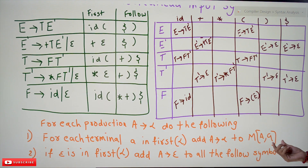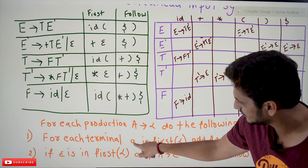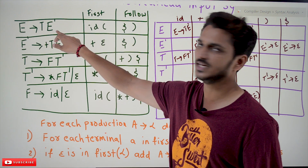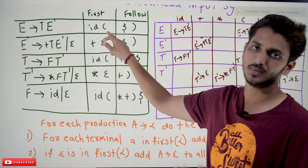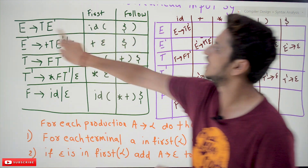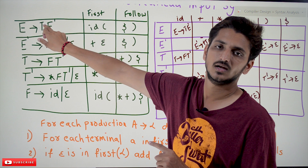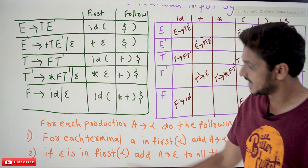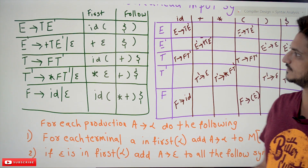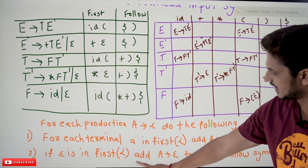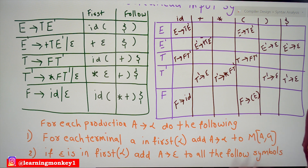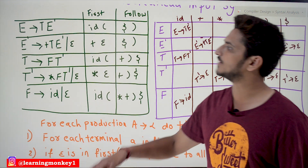Rule 2: if ε is in FIRST(α), add the production A → α to the table entry for every symbol b in FOLLOW(A). That is, add A → ε to M[A, b] for all b in FOLLOW(A). We'll now understand this with an example.